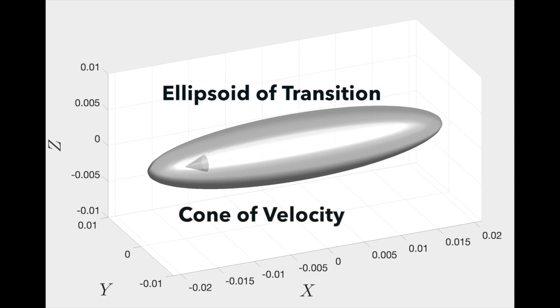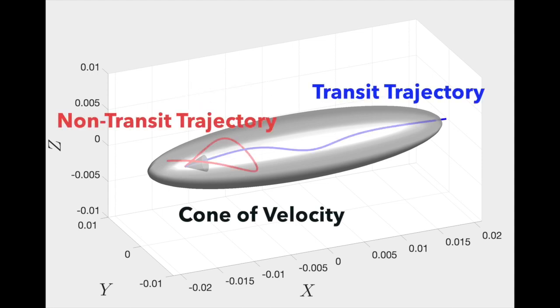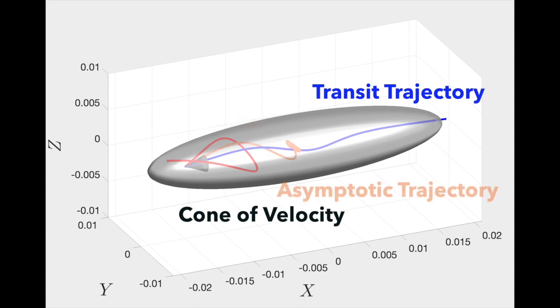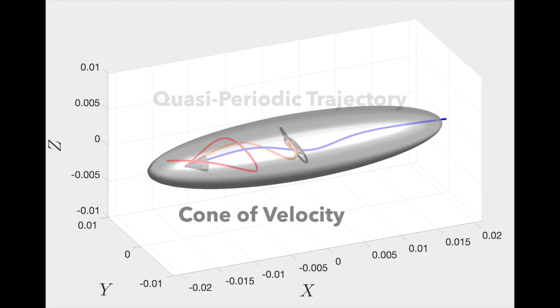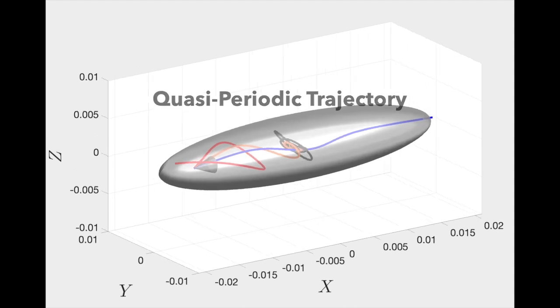Furthermore, at each point there's a cone of velocity. Trajectories outside do not transit. Trajectories inside the cone do transit. Trajectories on the cone boundary itself asymptote to an equilibrium point or a quasi-periodic trajectory.